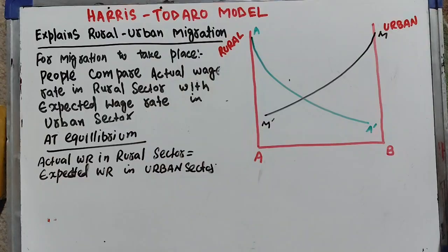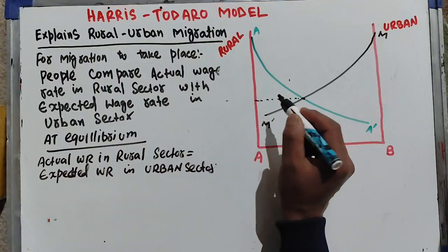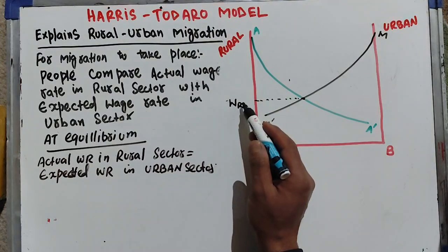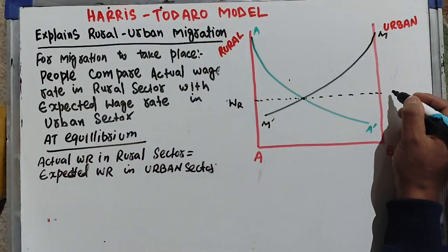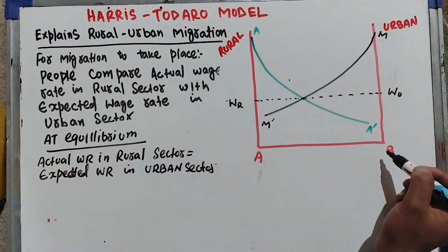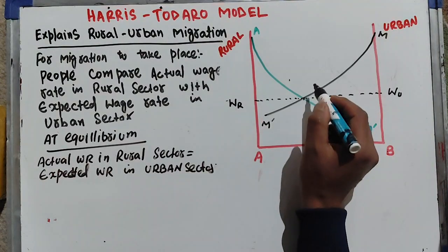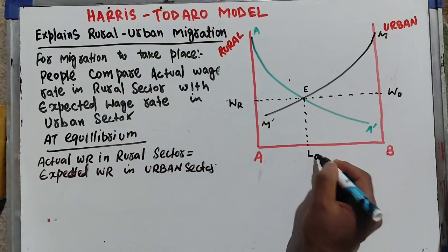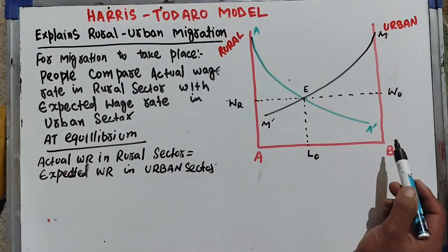Initially, these two curves meet at a point where WR is the wage rate in the rural sector and WU is the wage rate in the urban sector. At this initial equilibrium point, the portion up to L0 is in the rural sector and the remaining portion is in the urban sector.